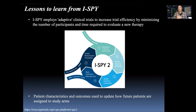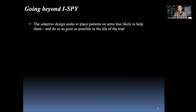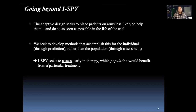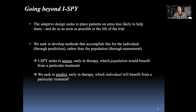Patient characteristics and outcomes are used to update how future patients are assigned to study arms. The adaptive design seeks to place patients on arms more likely to help them, and to do so as soon as possible in the life of the trial. I-SPY seeks to assess early in therapy which population would benefit from a particular treatment. Our goal is to predict early in therapy which individual will benefit — moving from assessing to predicting, and from the population to the individual.